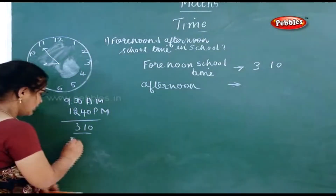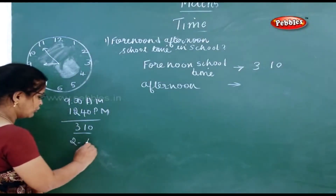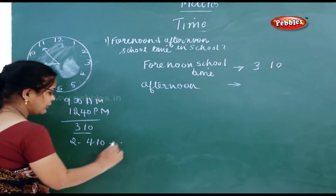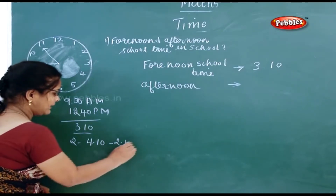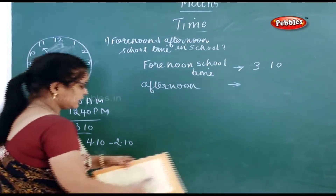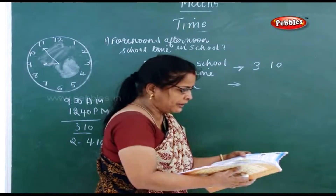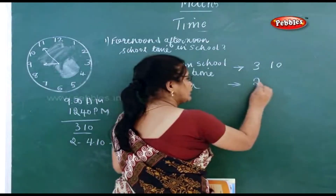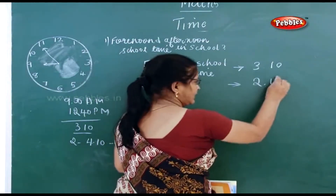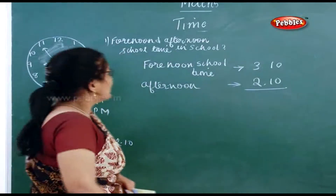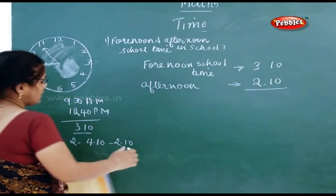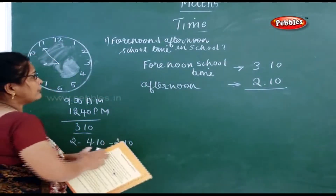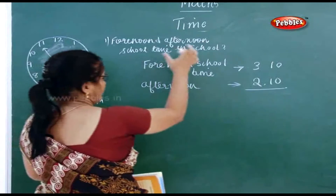Afternoon school time is 2 o'clock to 4:10. So that means 2 hours and 10 minutes. You have to write here 2 hours and 10 minutes. Now the question is: you have to find out the forenoon and the afternoon school time.